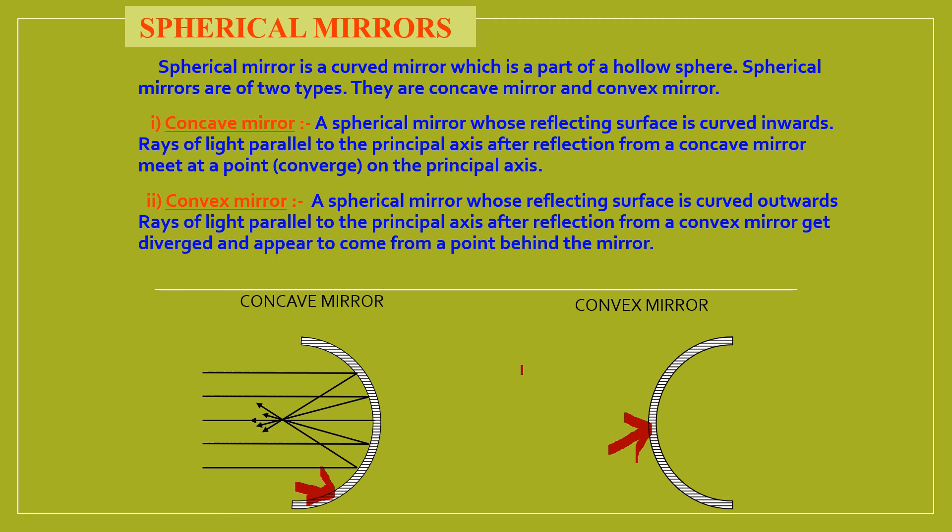See for convex mirror - the rays of light strike the reflecting surface which are parallel with the principal axis. After reflection they diverge from the mirror, and they are extended backwards. They appear to come from a point behind the mirror. This point is called as the focus for a convex mirror.